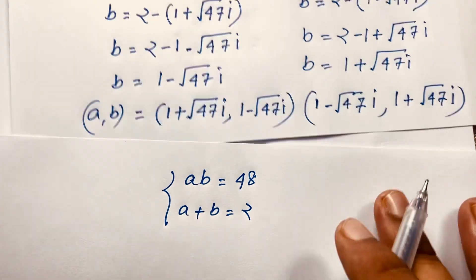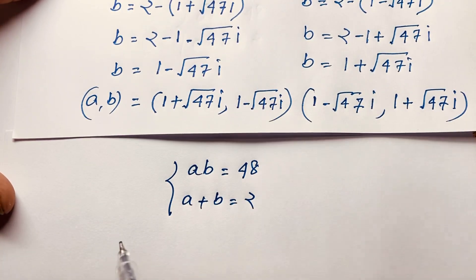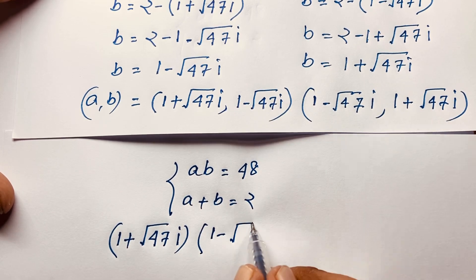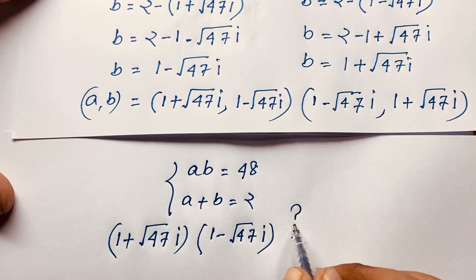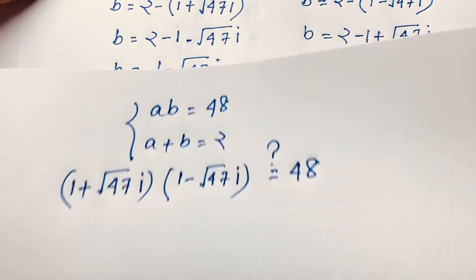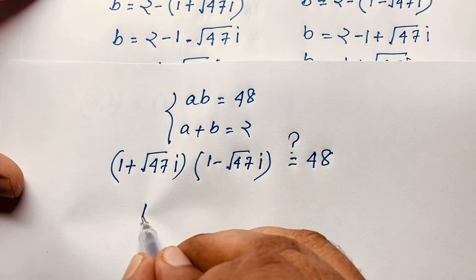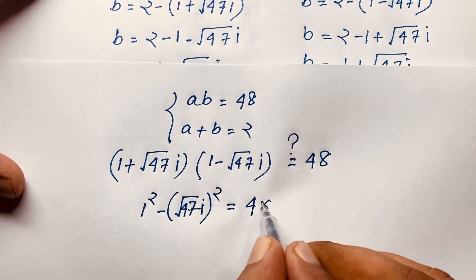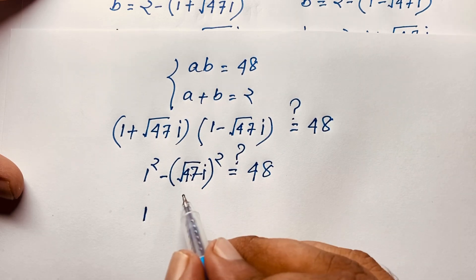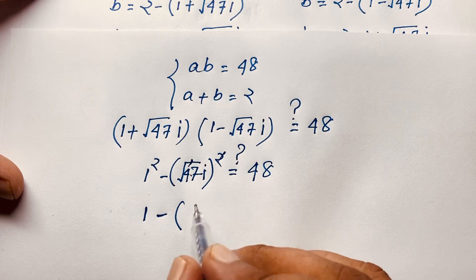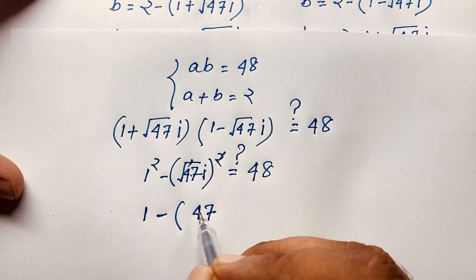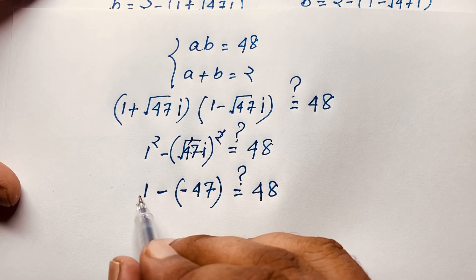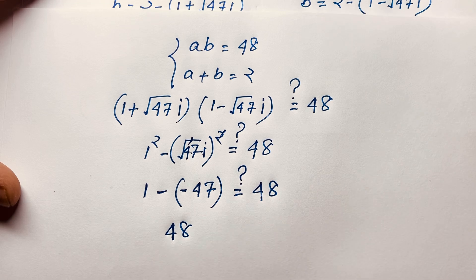Verifying av equals 48: a times b equals (1 plus square root 47 i) times (1 minus square root 47 i). This is of the form (a plus b)(a minus b) equals a squared minus b squared, so we get 1 squared minus (square root 47 i) squared. That is 1 minus 47 times i squared. Since i squared equals negative 1, we get 1 minus 47 times negative 1, which is 1 plus 47, equals 48. Left-hand side equals right-hand side.